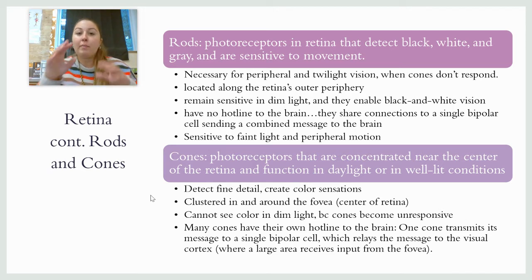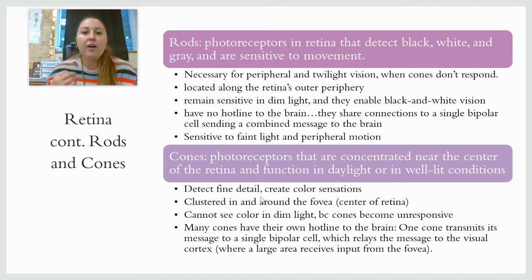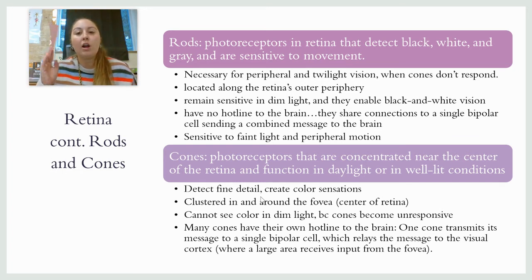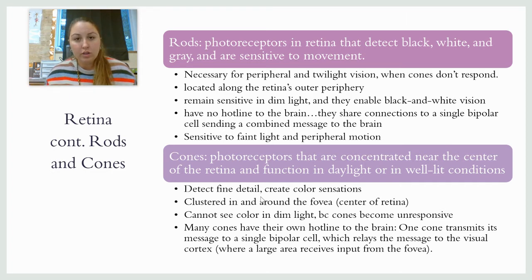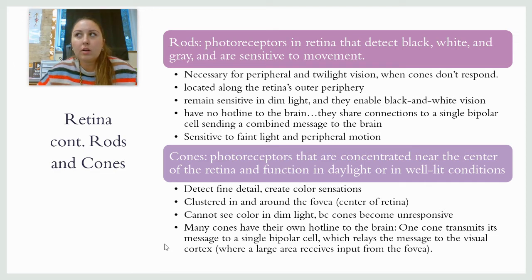Cones, on the other hand, are mainly located in the middle of the retina in a spot called the fovea, and they do well in daylight or well-lit conditions. Your cones detect fine detail and color. If I wanted to look at something really well, I wouldn't look at it peripherally — I would look at it straight on, because it's hitting the center back of my eye where my cones are. Cones are inactive in dim light — you can't see color — and each cone has its own hotline to the brain, transmitting to a single bipolar cell which relays the message to the visual cortex.